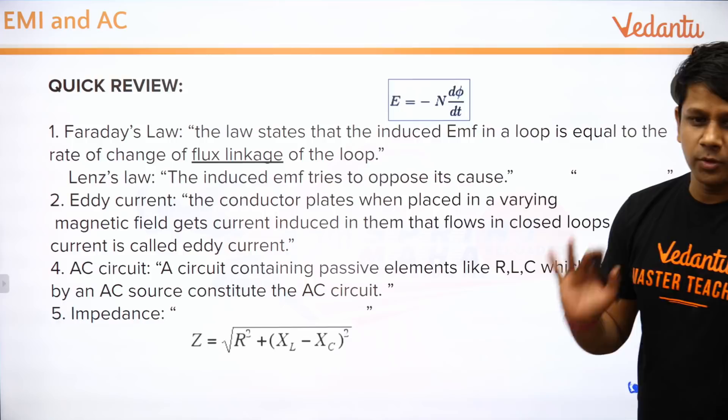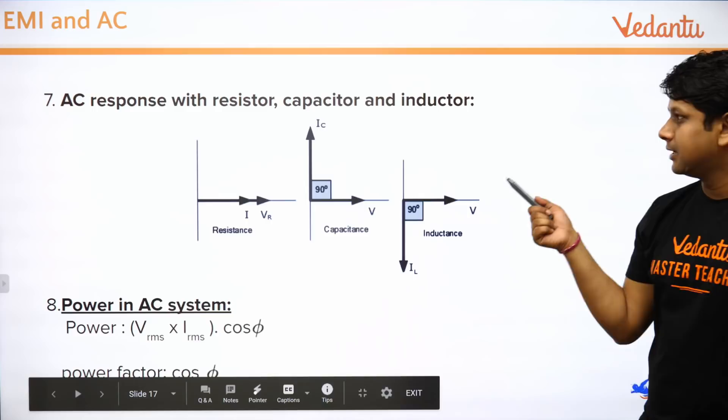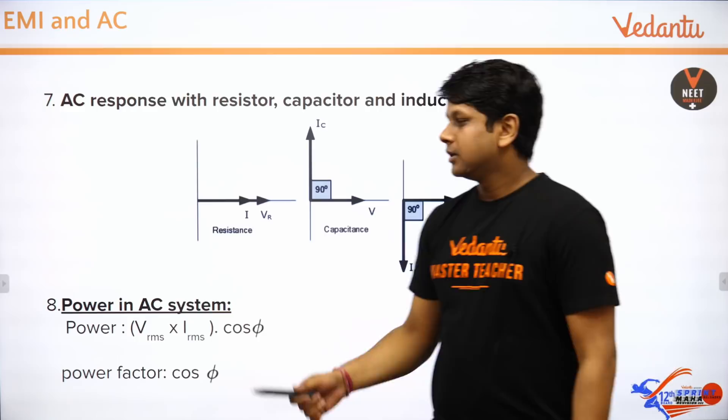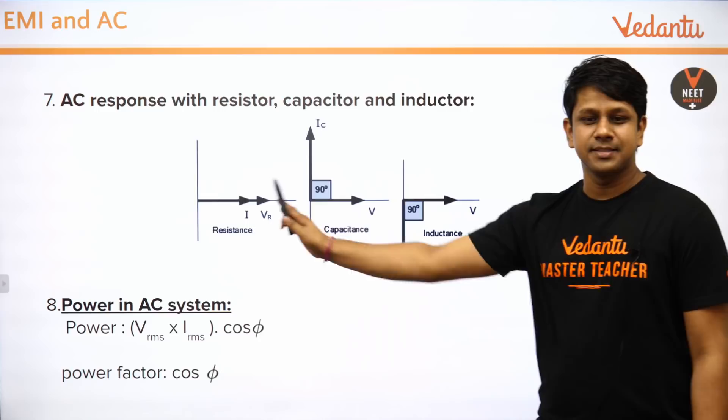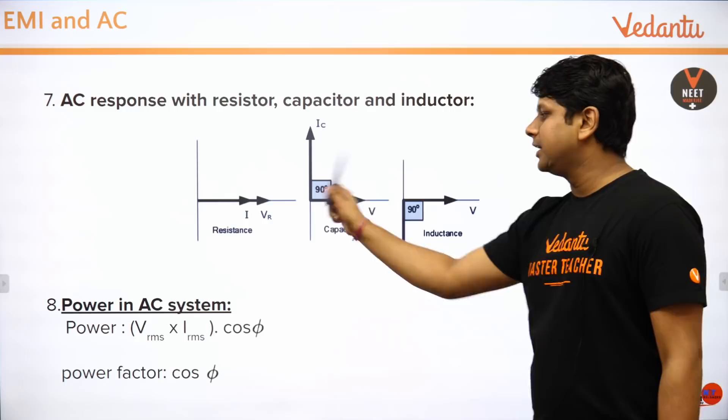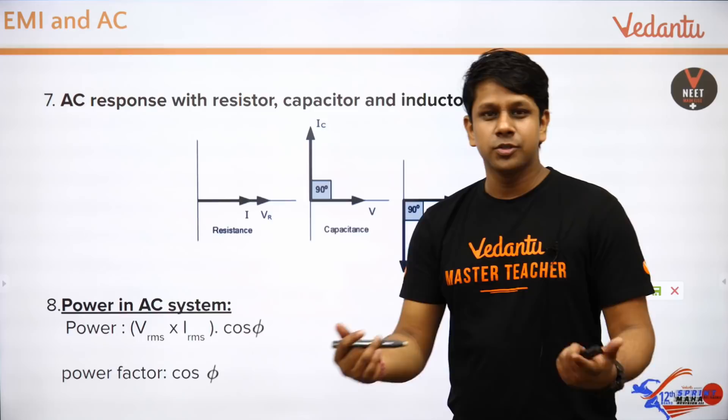Now, AC response with resistor, capacitor, and inductor: if you have alternating current with just a resistor, there is no phase difference — current and voltage are in phase. If you have a capacitor, current leads the voltage by 90 degrees.